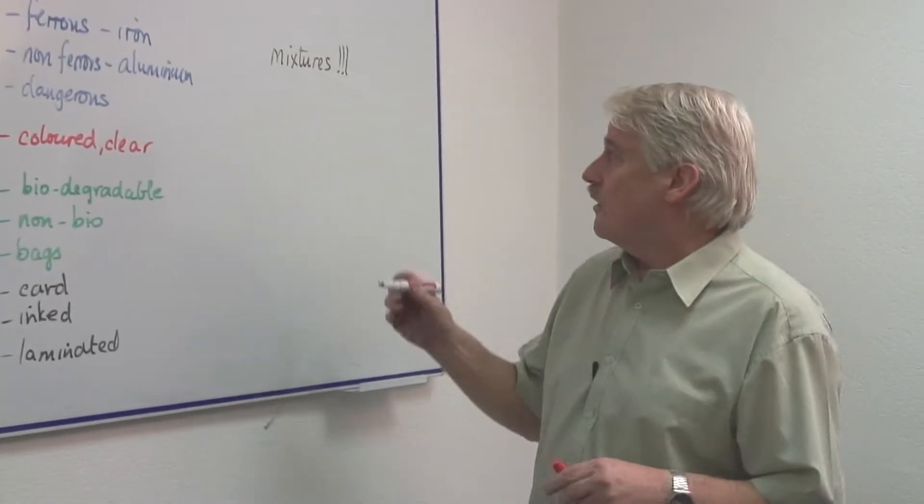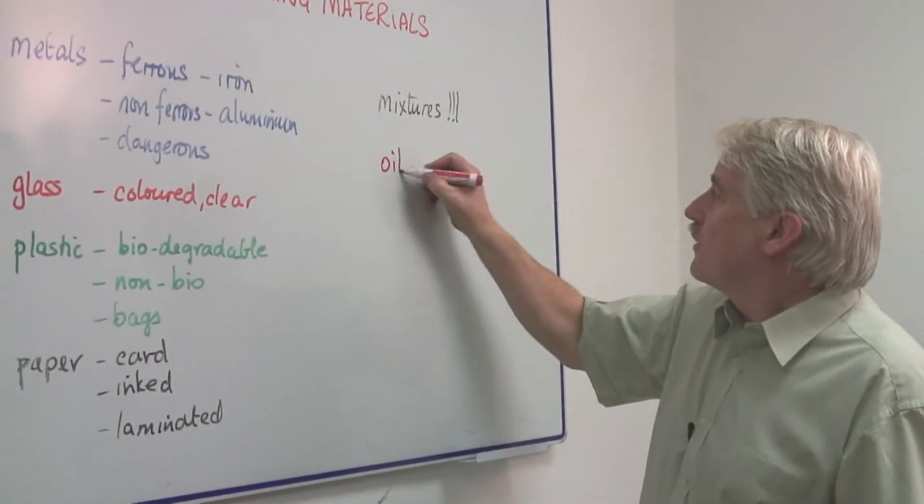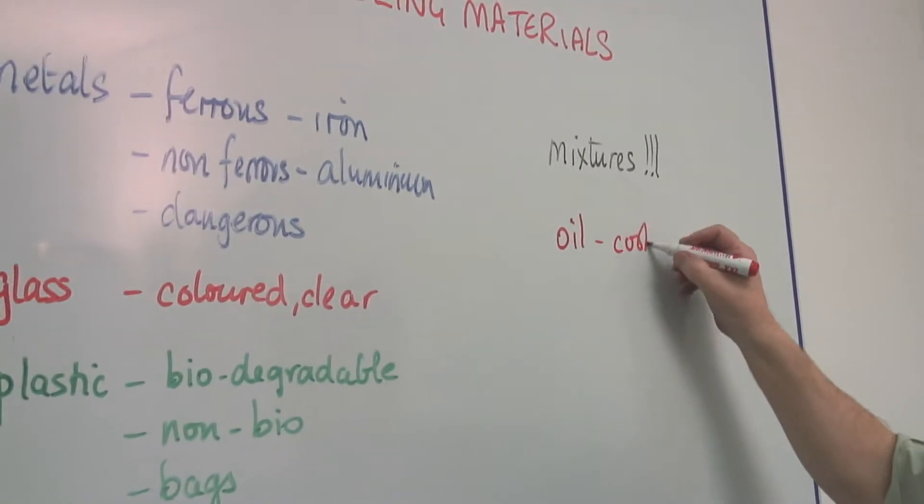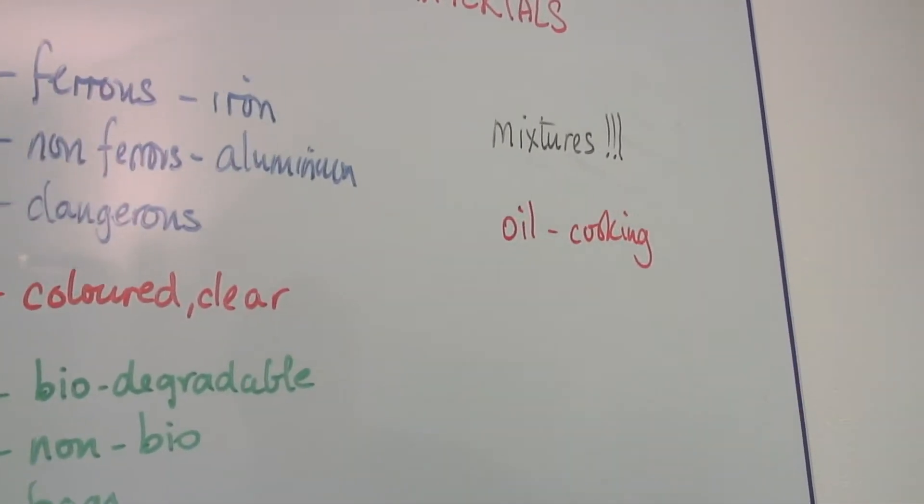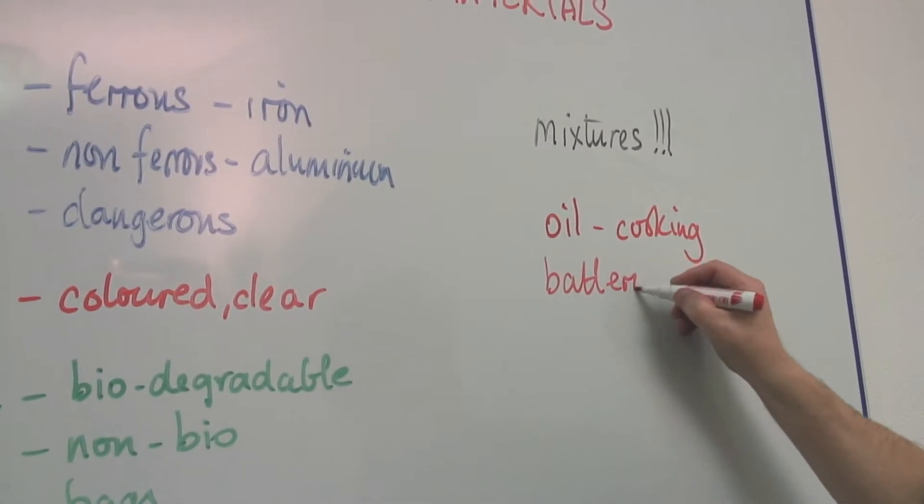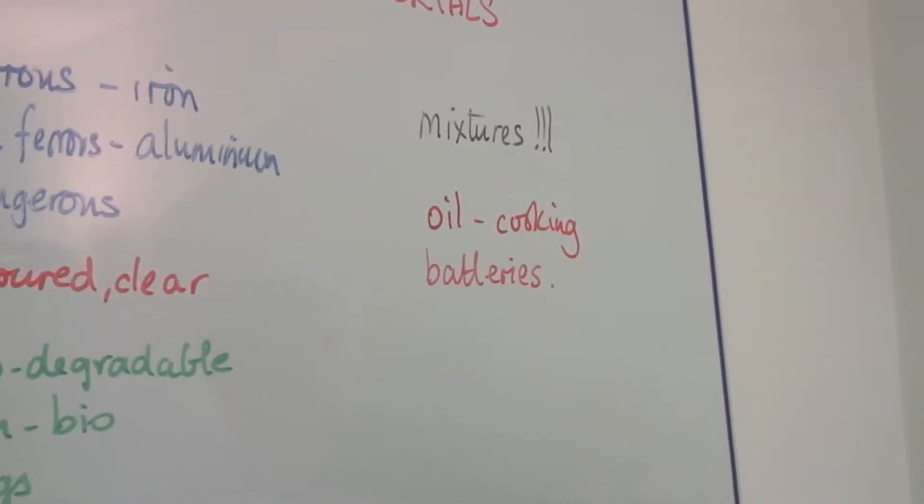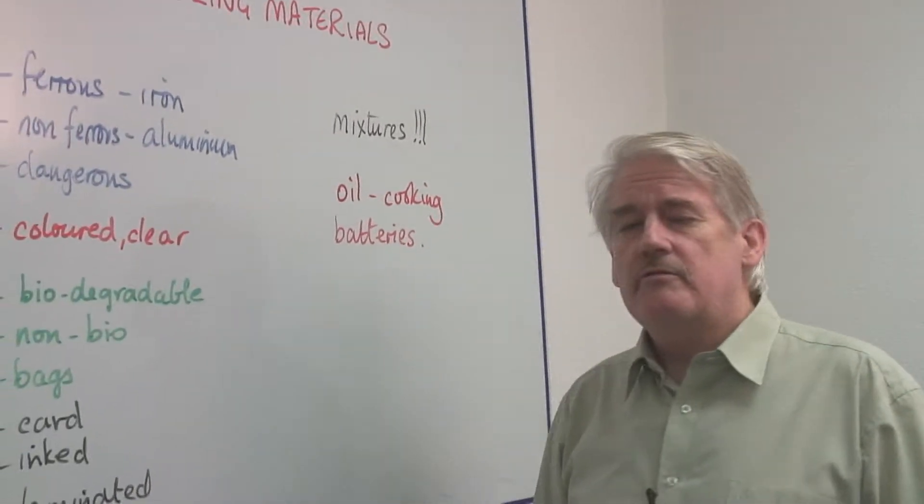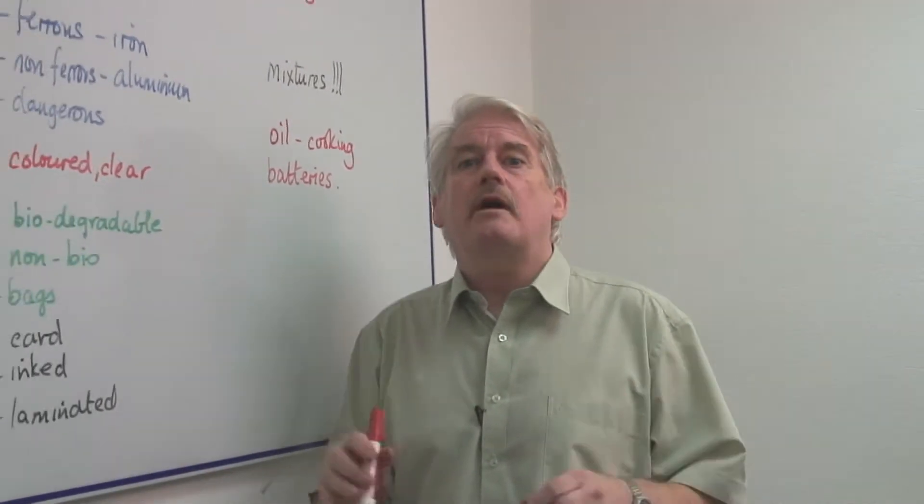But there are also other materials you might think about which is oil, that is cooking oil, that also can be recycled and things like batteries and cells. So we have to think about all these different types of material and let's see exactly what can be recycled and what we mean by recycled.